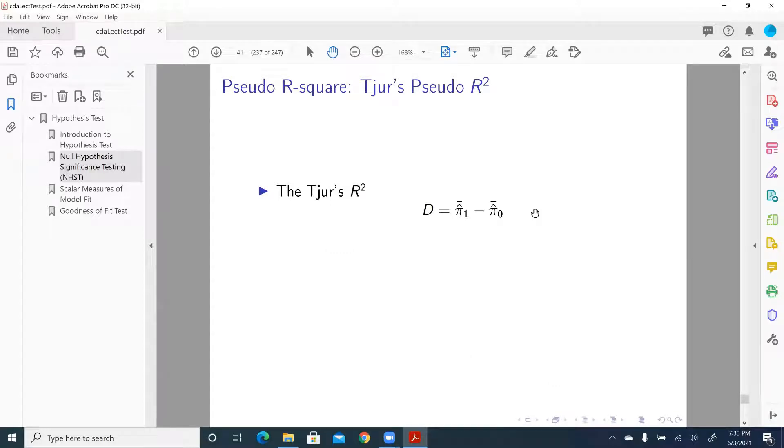Next is called Tjur's pseudo R-squared. I'm not very clear about the pronunciation, but Tjur's R-squared here basically is D equal to this number minus that number, and from here probably you can guess why it's related to a predicted probability.